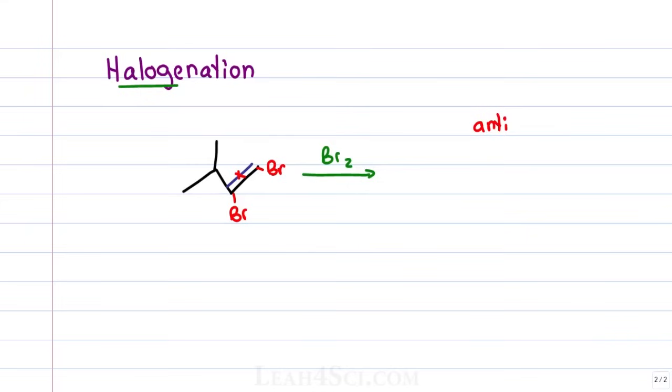That means that they'll add to opposite faces of the pi bond due to that bromonium or if you had chlorine, chloronium intermediate. The bridge will block whatever face it's on so that the other halogen has to add opposite. For this molecule you can't tell because the terminal carbon is primary but if you were to show dashes and wedges you would show one of them as a dash and one of them as a wedge to show that it's an anti-addition.